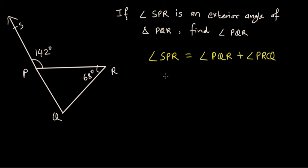We know the measure of angle SPR which is given as 142 degrees. Measure of angle PQR, we don't know, we need to find out. And we have been given the measure of angle PRQ which is 68 degrees.